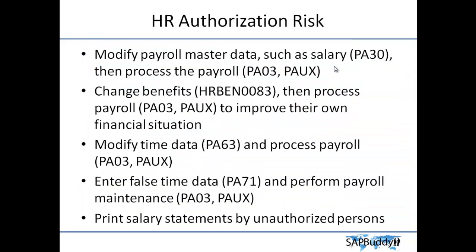For example, they can also change HR benefits — the HR benefits can be changed and the payroll process run again, because benefits come with your payroll. They can also modify time data. For example, if salary is paid based on number of hours worked, and you have authorization for PA63, you can go to PA63 and enter time data with a lot of hours booked, then run the payroll process. You can also put false time data in PA71 and run the payroll process.